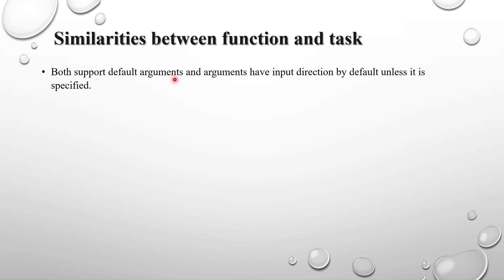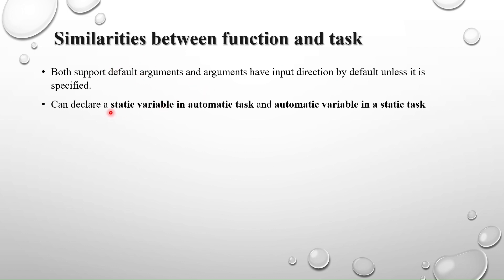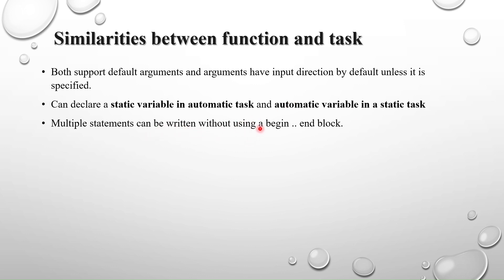Now we will see similarities between function and task. Both support default arguments, and arguments have input direction by default unless you specify otherwise. Both can declare static variables in automatic tasks and automatic variables in static tasks — similarly for functions. Multiple statements can be written without using a begin-end block.